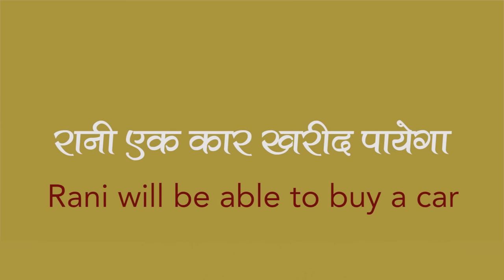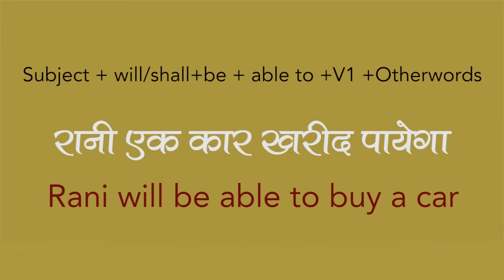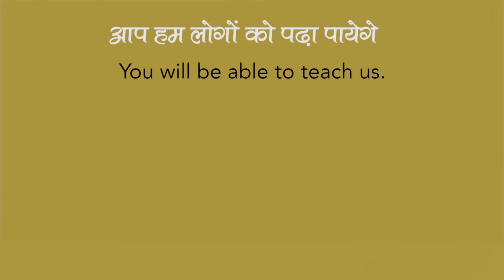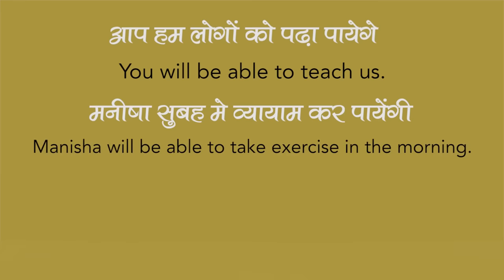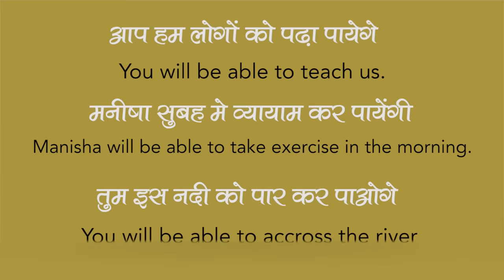The next sentence is: Rani will be able to buy a car. The structure is: Subject plus will be able to, plus V1, plus other word. For example: You will be able to teach us. Manisha will be able to take exercise in the morning. You will be able to cross the river.